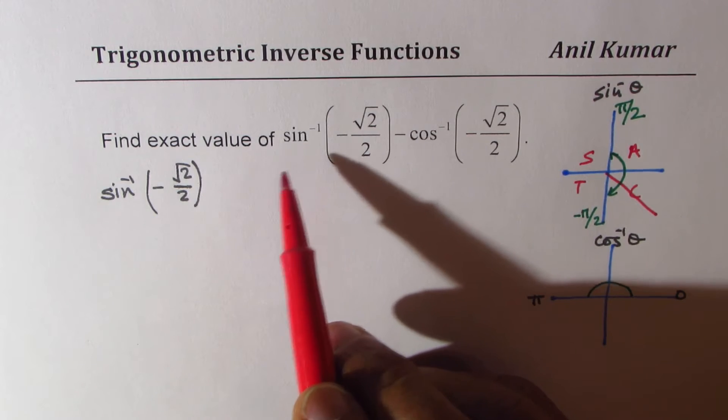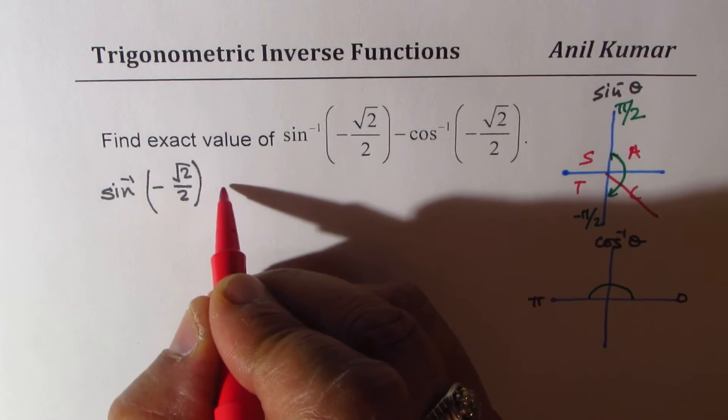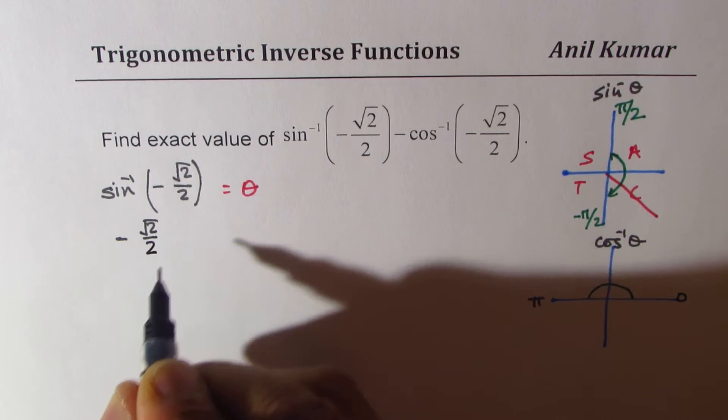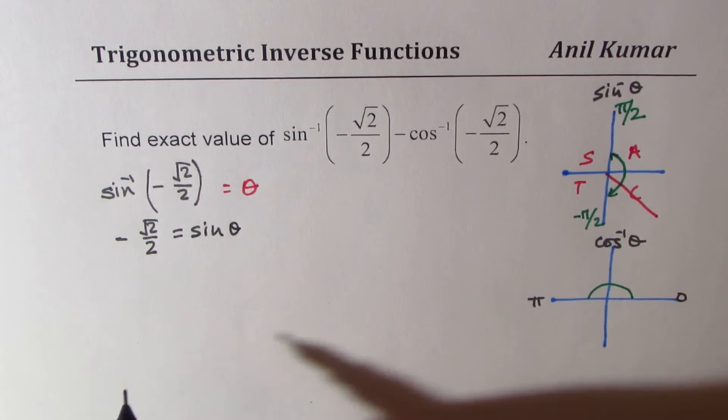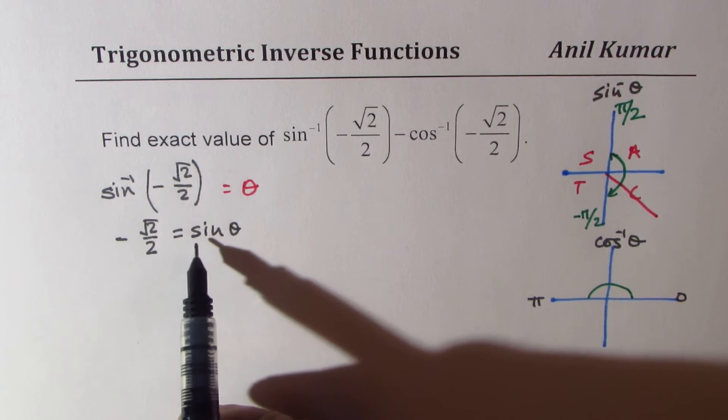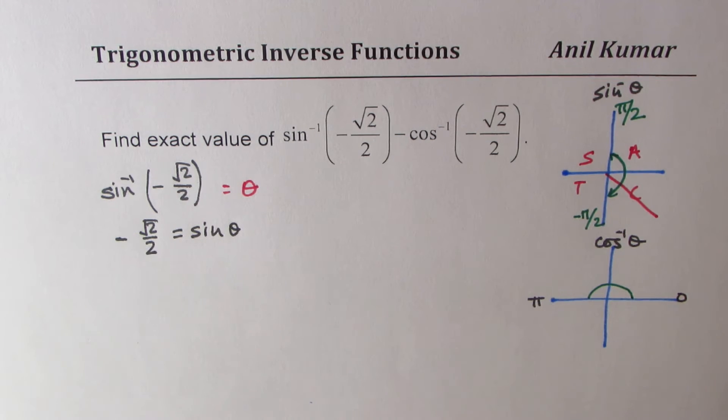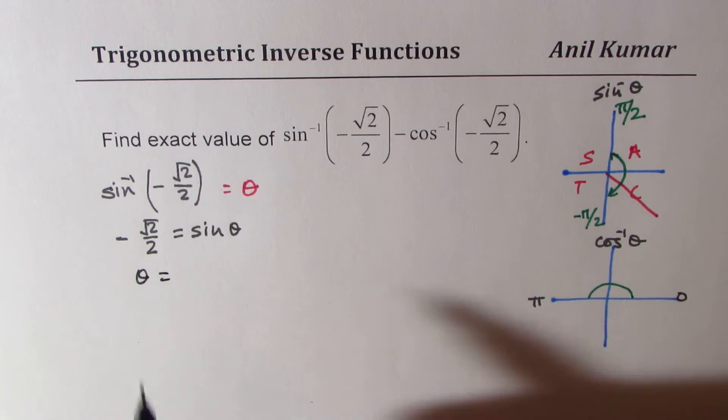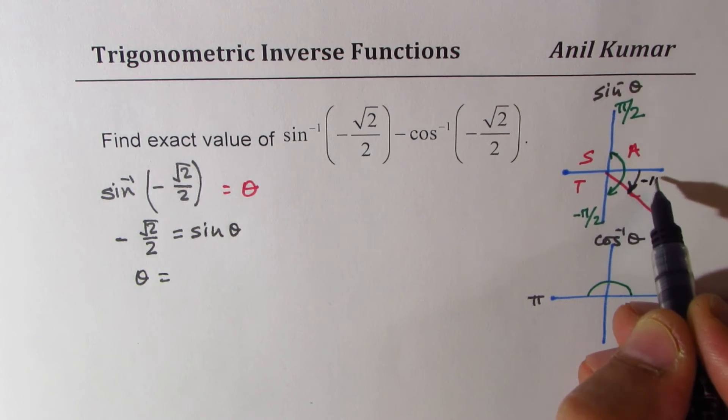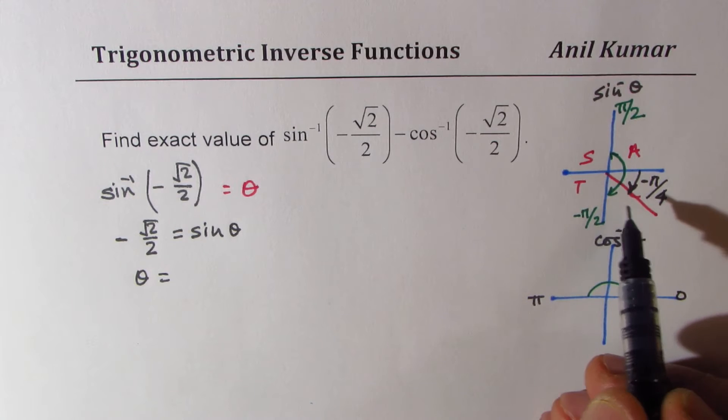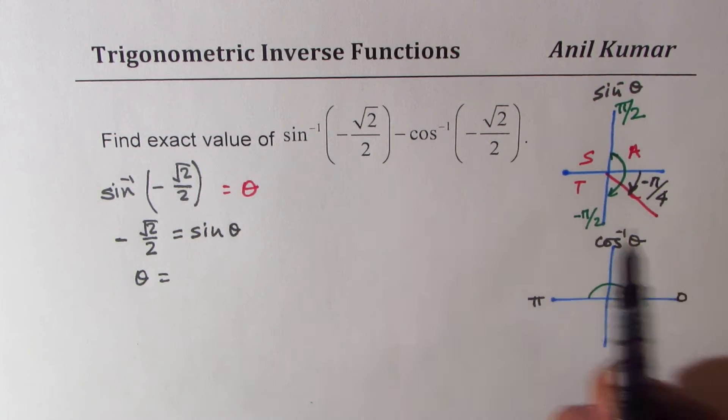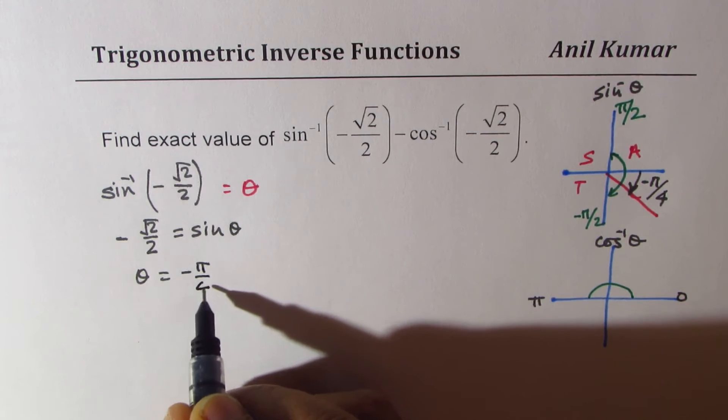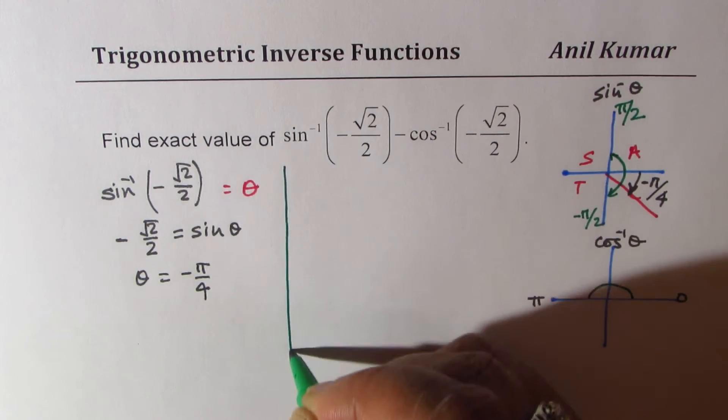And for what value do we have this negative value? So basically we could say this is equal to theta, or you can say minus square root 2 over 2 is sine theta. So when is sine theta equals to minus square root 2 over 2? That is for theta equals to minus pi by 4. So you could be in coordinate 4 to get this answer, since sine inverse is only valid from minus pi by 2 to pi by 2. So theta is equal to minus pi by 4. That is the sine inverse part.